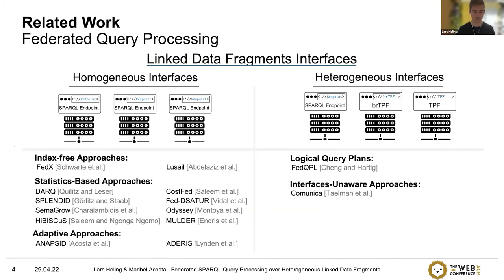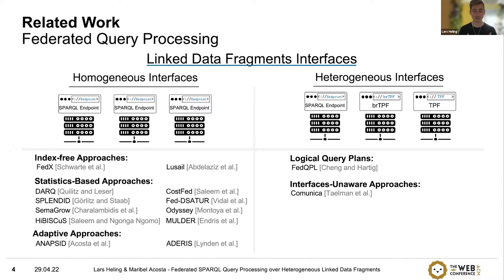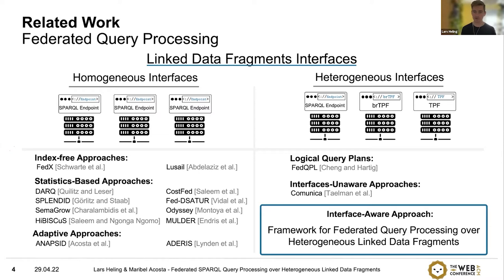Looking at related work, there is a lot of work on homogeneous federations that mostly focus on SPARQL endpoints, including index-free, statistic-based, and adaptive approaches. On the other hand, in the area of heterogeneous federations, only a few works exist: FED-QPL with a language for logical query plans, and Comunica as a client able to query different types of interfaces — but it does not consider interface capabilities specifically when querying. That's why we propose an interface-aware approach with our framework for federated query processing over heterogeneous linked data fragments.